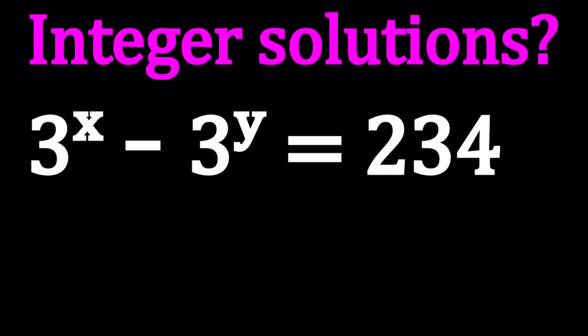First of all, notice that 3 to the x minus 3 to the y is a positive difference, which means it's greater than 0. 234 is greater than 0. This implies that 3 to the x is greater than 3 to the y, and that implies x is greater than y. The greater exponent gives us a greater result. Is it always true with 3? Yes, because it's an increasing function.